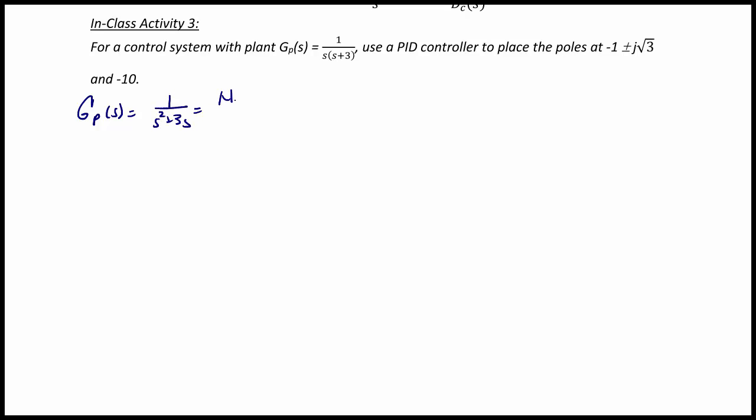The desired characteristic equation is equal to s plus 10 times s plus 1 plus j square root of 3, times s plus 1 minus j square root of 3,